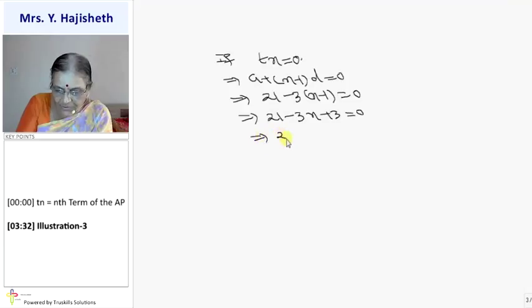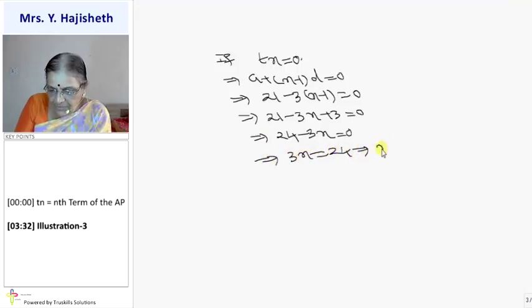Matlab, usmein not possible aaya tha, usmein possible aayega. 3N is not zero, it's on the other side. Implies 3N is 24. So which term is 0 here? 8th term is 0. T8 is 0.